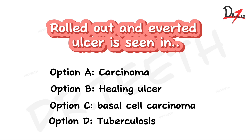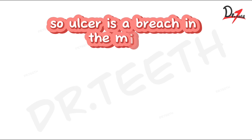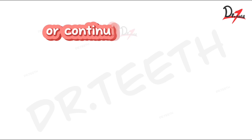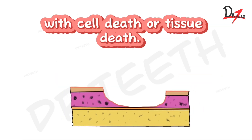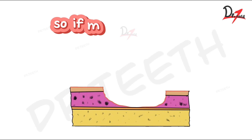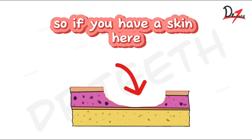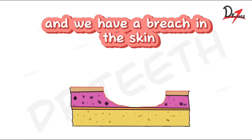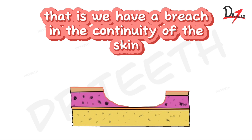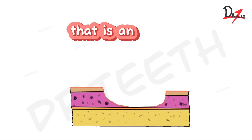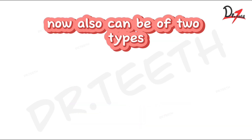First, we'll understand what an ulcer is. An ulcer is a breach in the mucosa or continuity of the skin with cell death or tissue death. If we have a skin and there is a breach in its continuity, that is an ulcer.